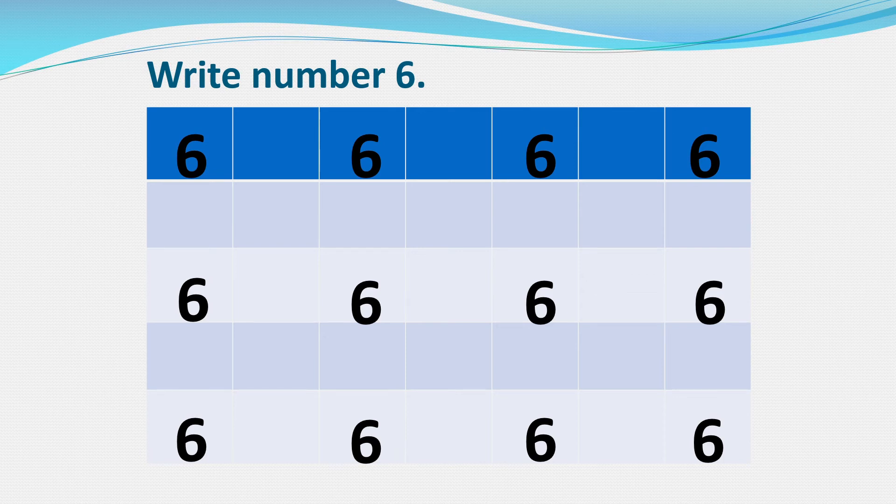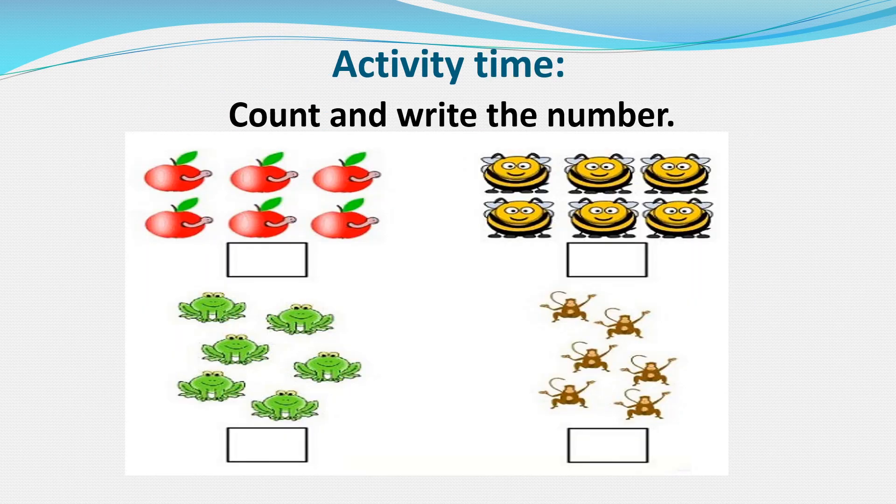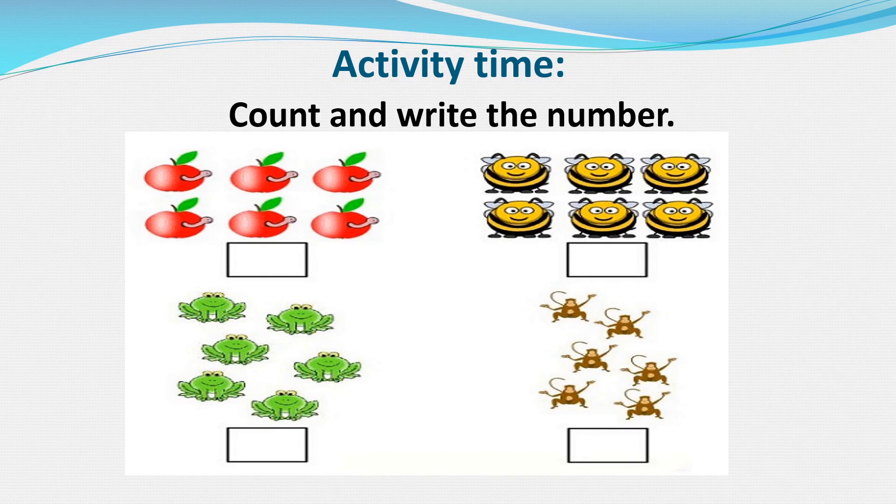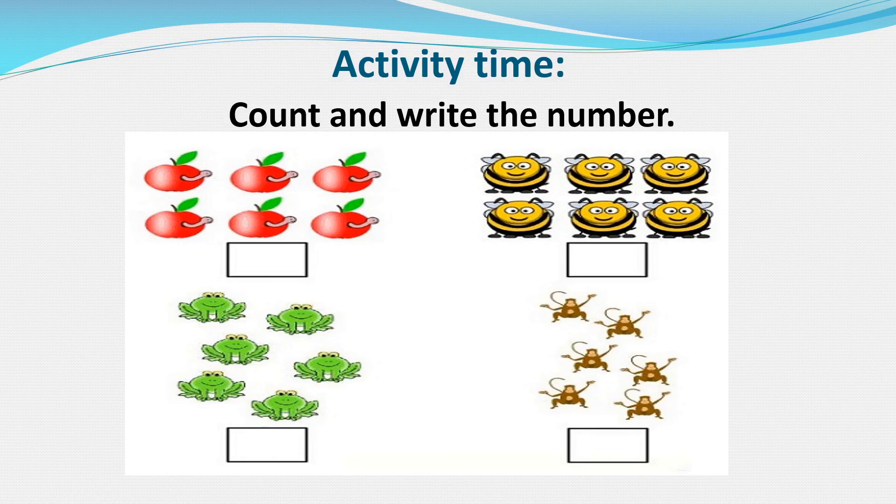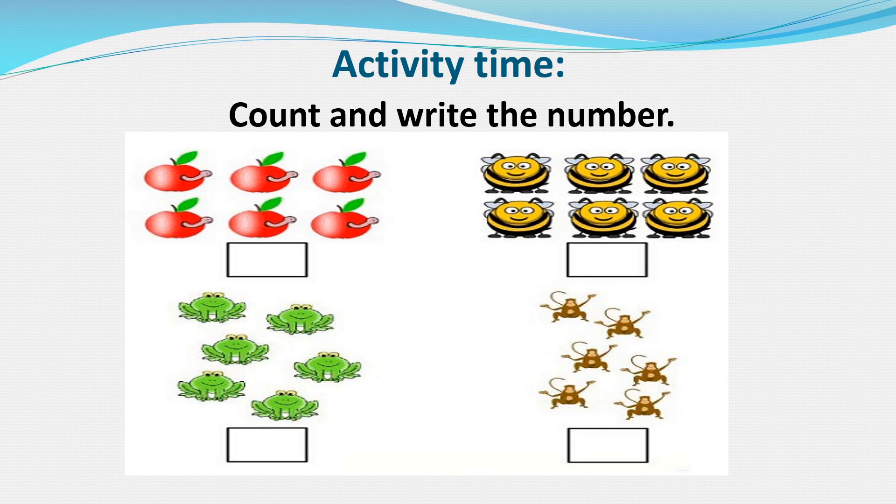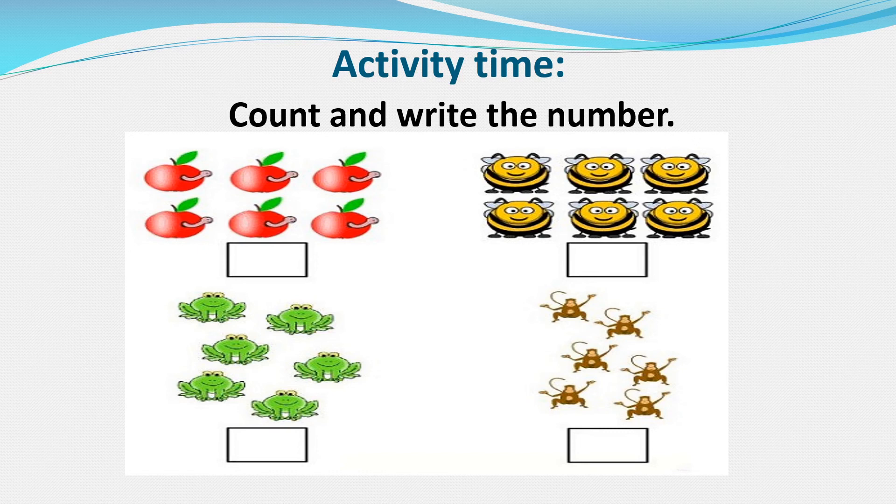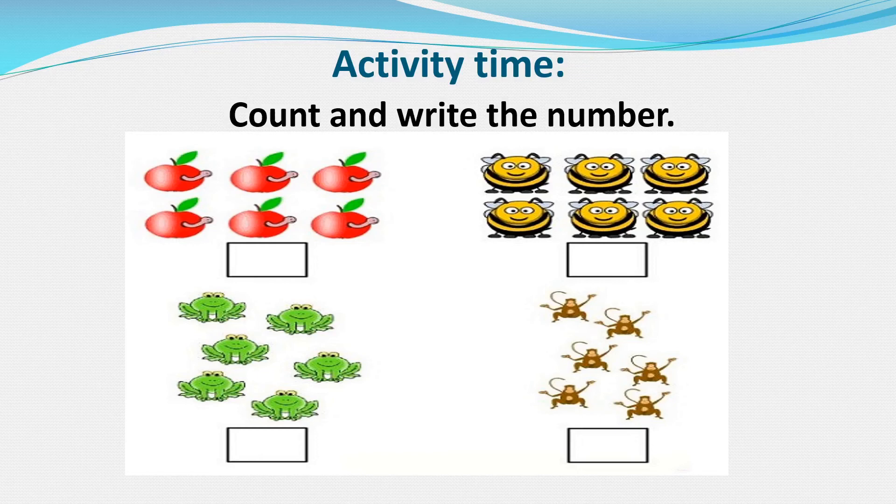Great, great, you all did it very beautifully. In the last we will be doing activity. Here we have to count and write the number in the given box. Yes, let us count the first object. How many apples can you see? Count it. One, two, three, four, five, six. So we will write number six in the box.